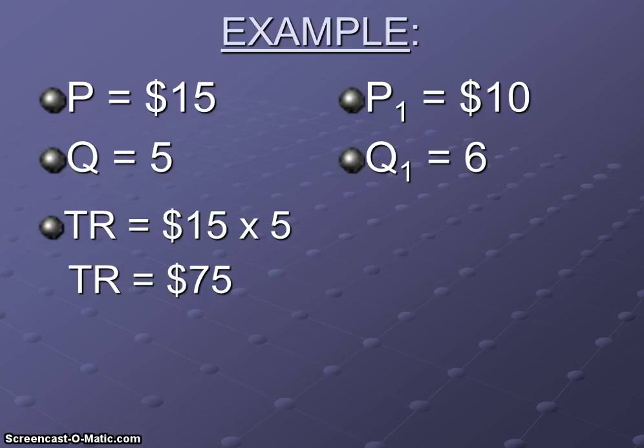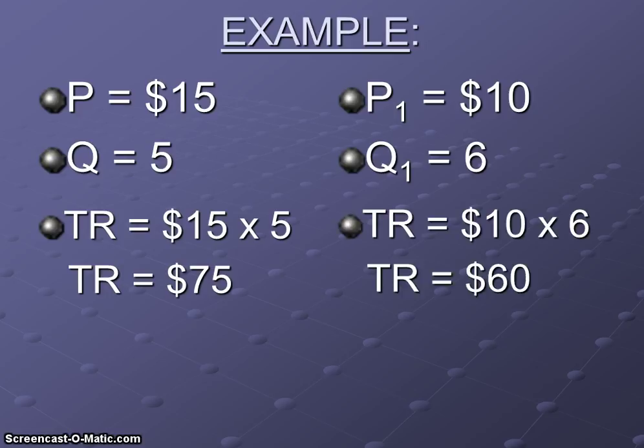Total revenue at the original price of $15. Total revenue is price times quantity sold. So, $15 times 5 is $75. And total revenue at the new price of $10 would be $10 times 6 or $60.